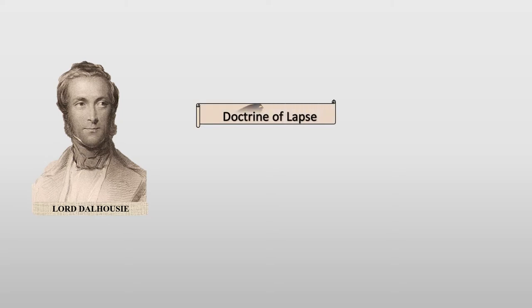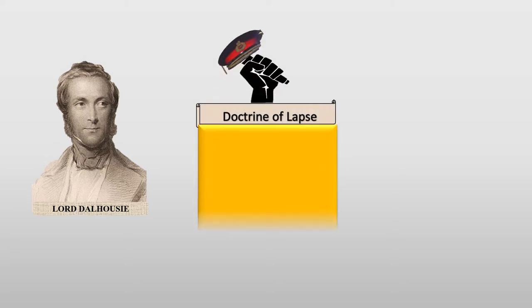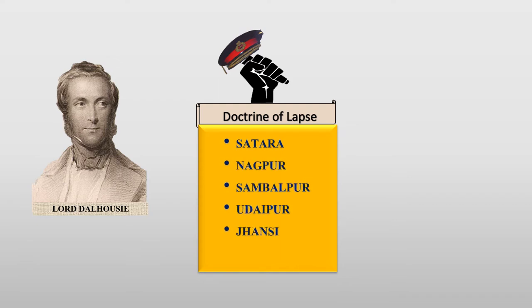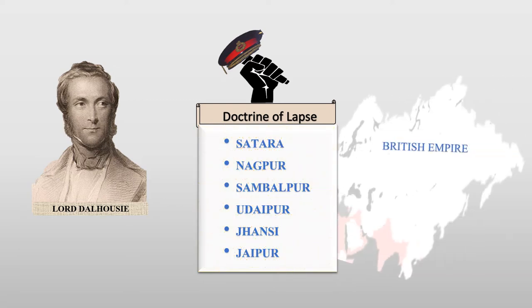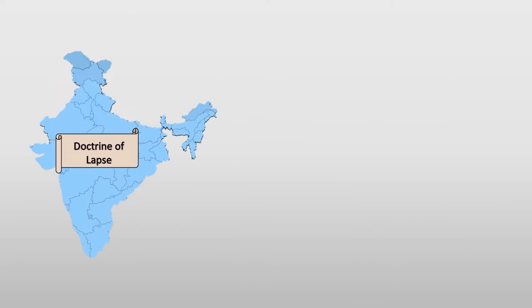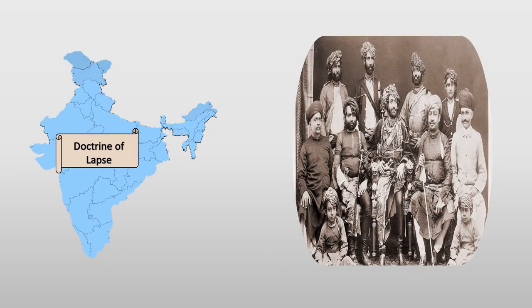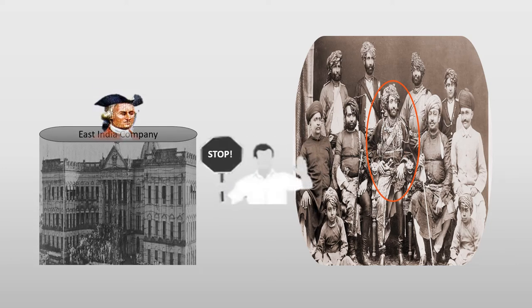Dalhousie used this policy as a political weapon against princely states like Sitara, Nagpur, Sambalpur, Udaipur, Jhansi, and Jaipur, and merged them with the British Empire. Once this policy was severely applied, the princely families including ordinary people showed true love and loyalty to their kings, which made them strongly oppose the company.